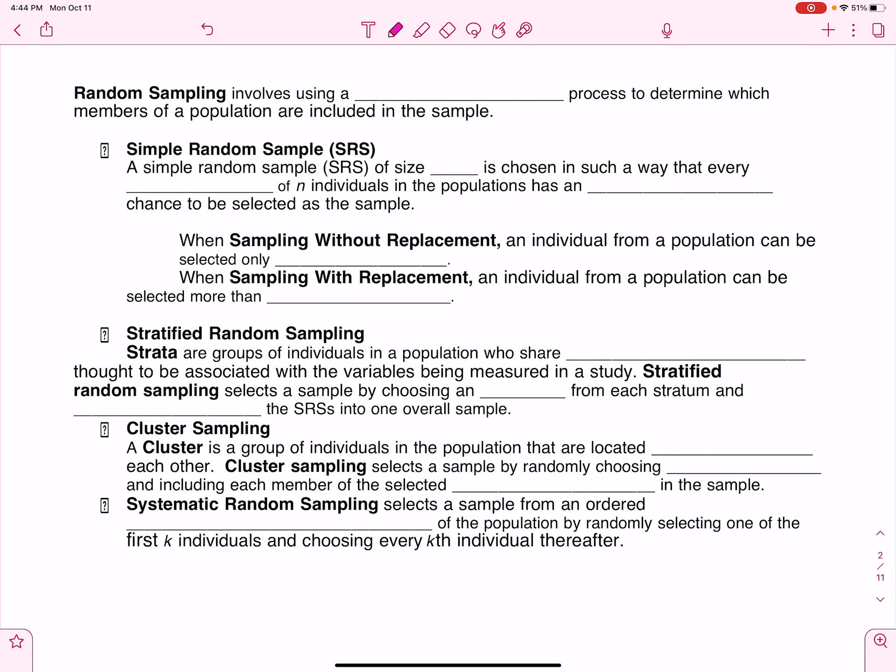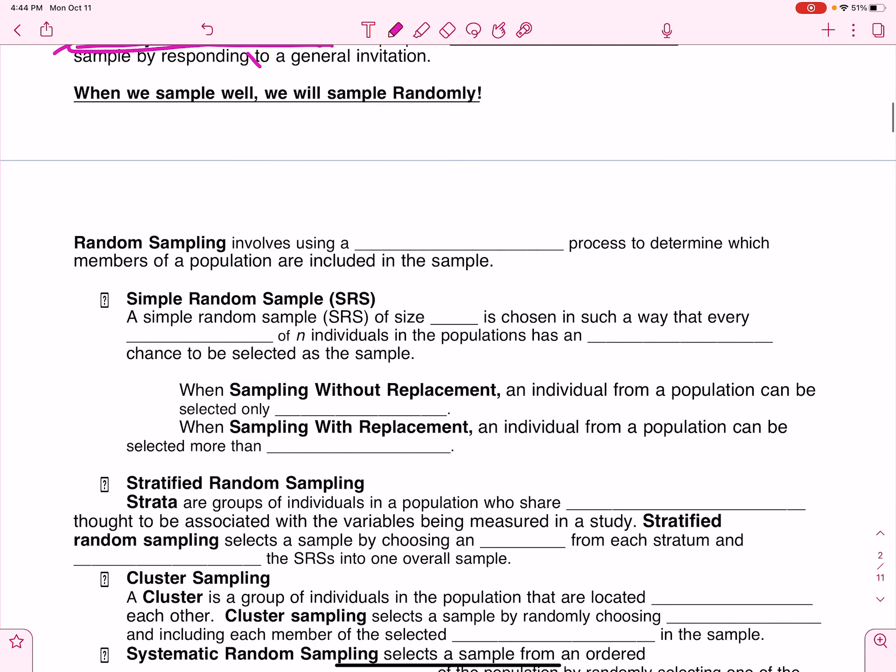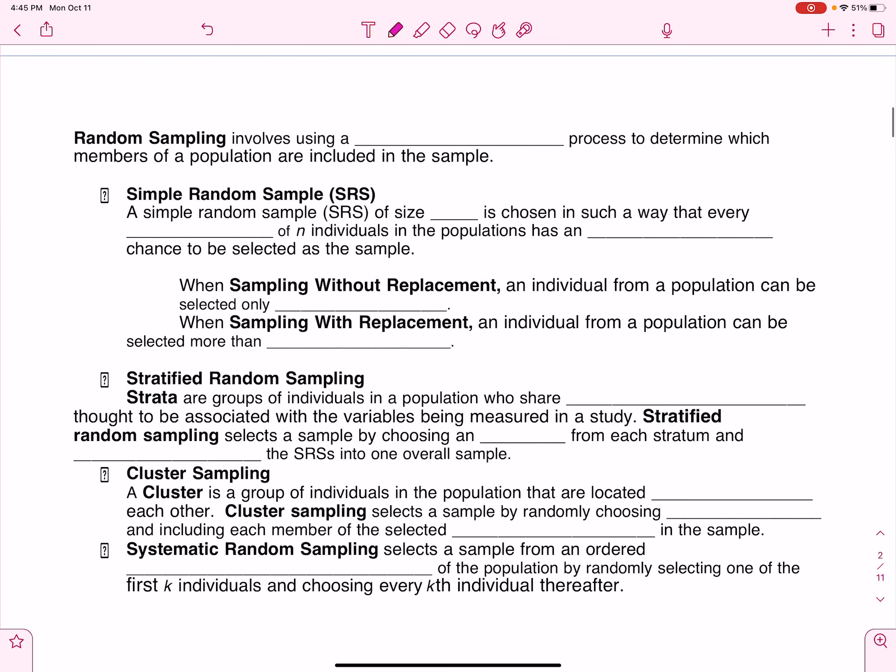So anytime we want to sample, we want to do so randomly because that will make our lives better. Random sampling involves using a chance process. That is the goal.